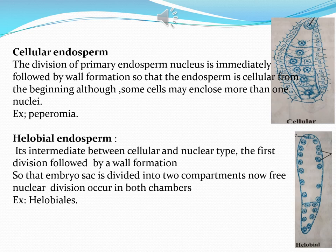Now we discuss cellular endosperm. In cellular endosperm, the division of the primary endosperm nucleus is immediately followed by wall formation. After mitotic divisions, walls form between the nuclei, giving a cellular structure from the beginning. As we can observe in the diagram, there are a number of cells each having a cell wall, and they look like compartments.